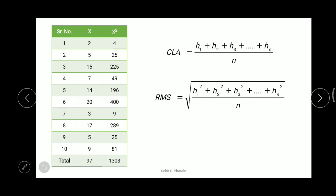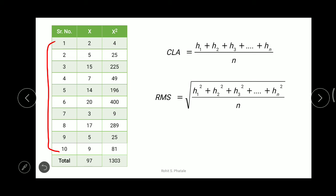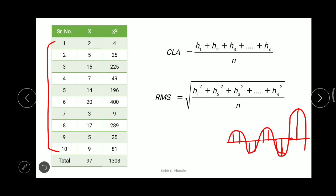In the worked example, we have taken 10 different heights for the same sample. Here x represents the height — x1, x2, x3, x4 and so on. The first value is 2, then 5, 15, and so on up to x10 which is 9. For the centerline average method we add all these x values. Adding them gives 97. With n equal to 10, the CLA value becomes 97 / 10 = 9.7 micro inches.